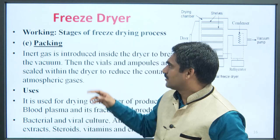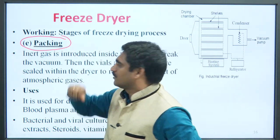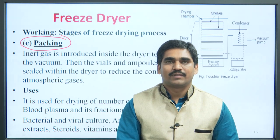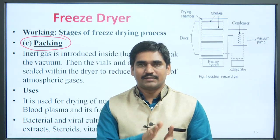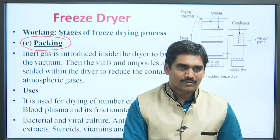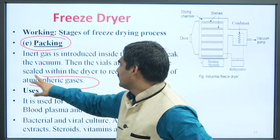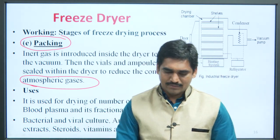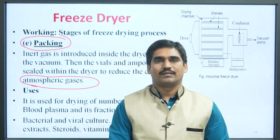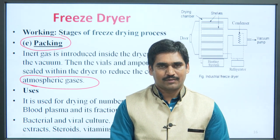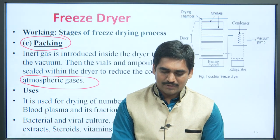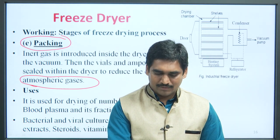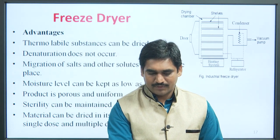The last stage is packaging. After the final stages of drying, an inert gas is introduced inside the dryer to break the vacuum. Then the vials and ampoules are sealed within the dryer to reduce contact with atmospheric gases and remove chances of contamination of the product. Uses of freeze dryer: it is used for drying of a number of products like blood plasma and its fractionated products, bacterial or viral cultures, antibiotics, plant extracts, steroids, vitamins and enzymes.